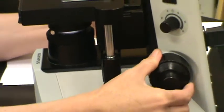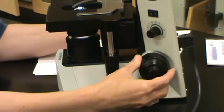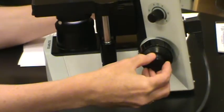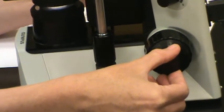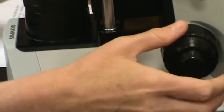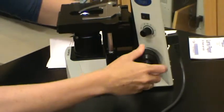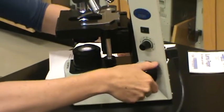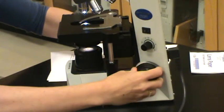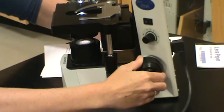The coarse knob moves the stage in large increments, whereas the fine focus knob, the inner knob, moves the stage in very small, almost impossible to see increments. Notice that when you turn the coarse knob towards you, the stage moves down, whereas when you move the knob away from you, the stage moves upward.